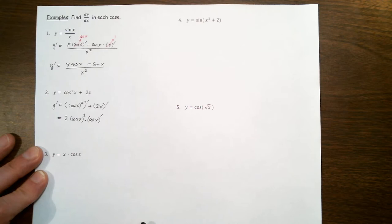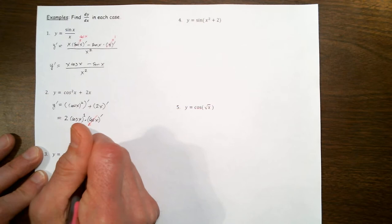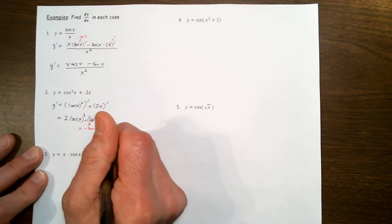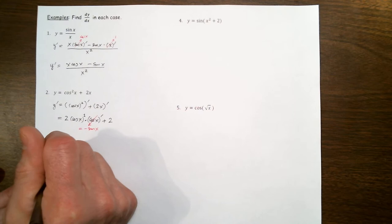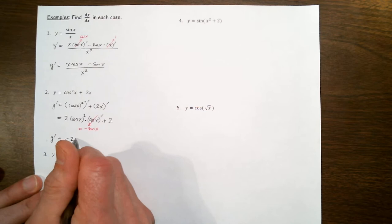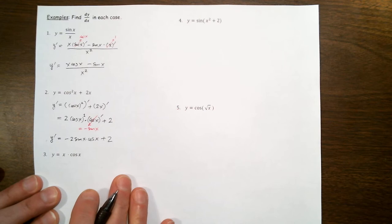We know the derivative of cosine of x has been proved to be negative sine of x. To this we add the derivative of 2x, which is 2 times the derivative of x, or just 2. Therefore, the derivative of y is minus 2 sine of x times cosine of x, plus 2. That's the derivative of this sum function.